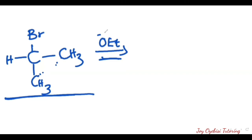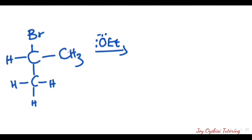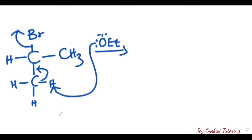Because of this strong base, we proceed with E2 elimination. Remember, E2 is a one-step reaction mechanism. In E2, the hydrogen that will be removed must be anti to the carbon bearing the halogen. So we pick the hydrogen from that anti carbon; the bond breaks, the halogen is removed — since carbon cannot have more than four bonds — and this one-step reaction gives us the alkene product.